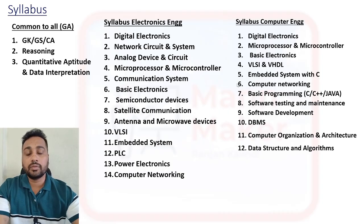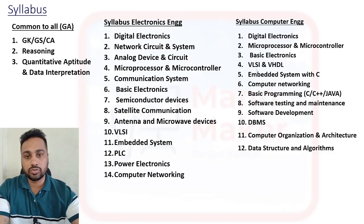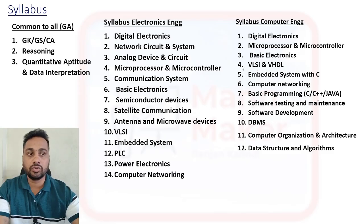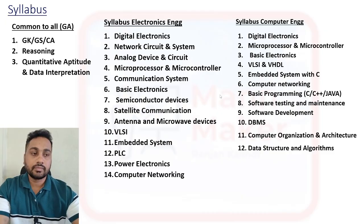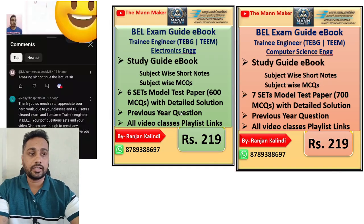Most of the questions will come from the Computer Science core subjects. From the Electronics part, you will get questions from Digital Electronics, Microprocessors, and Basic Electronics. However, for VLSI, VHDL, and Embedded Systems with C, there is less chance — you will likely get only one or two questions from these. If you feel these topics are too tough, you can skip them, but make sure to prepare the rest thoroughly as they carry higher weightage in the exam.